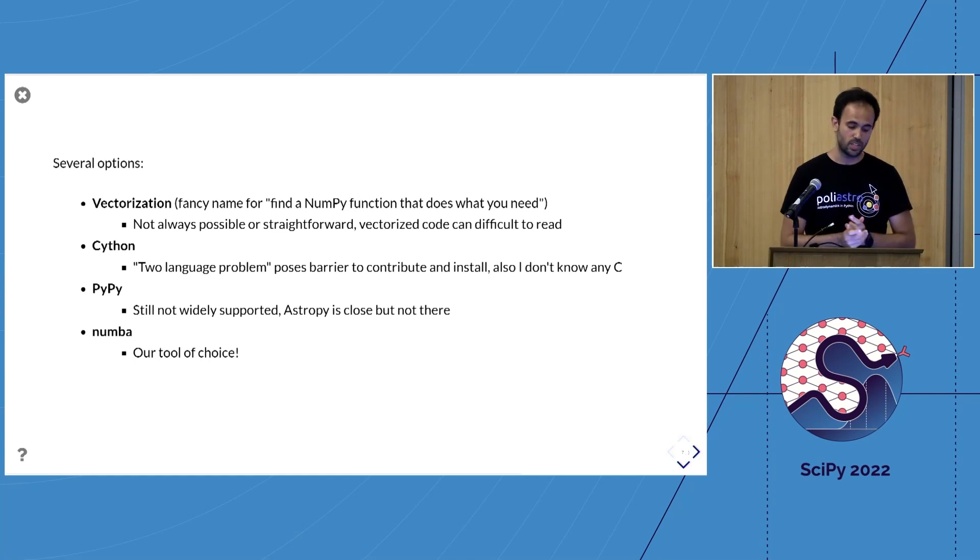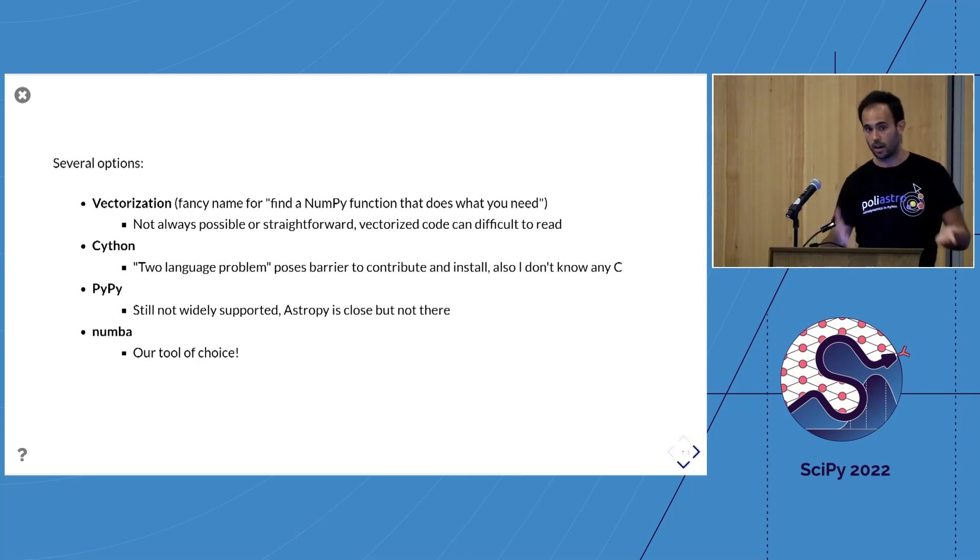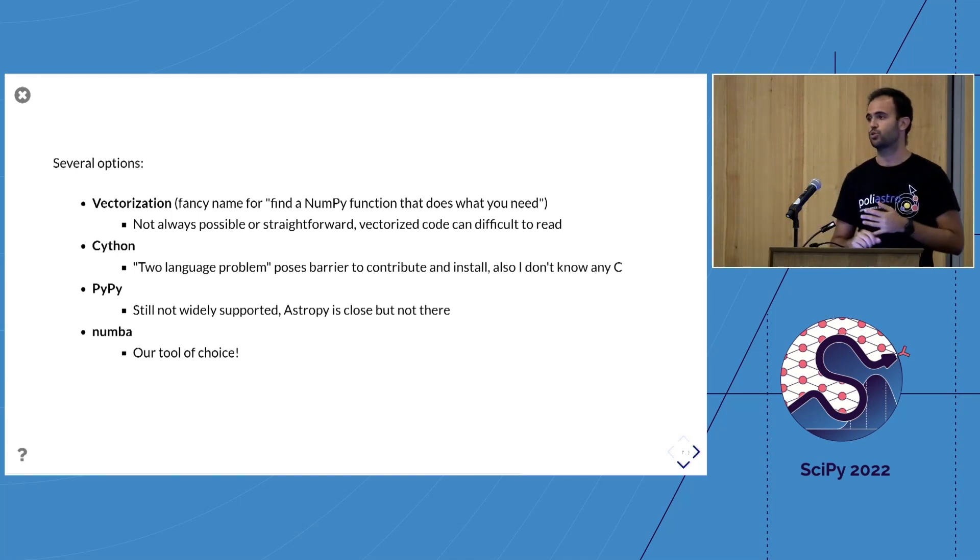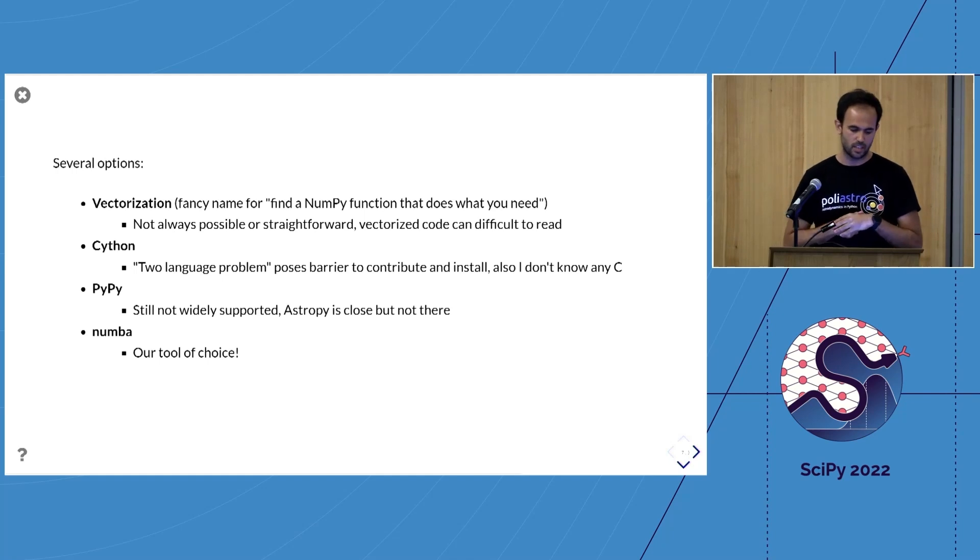There are several options to accelerate Python code. I'm not going to get into details, but we've considered them all. We started with vectorization, which is a fancy word for finding a NumPy function that does what you need or writing your computation in a way that fits NumPy arrays. I found that, first, this is not always easy to do, especially with sequential problems like integrating an ordinary differential equation. Also, vectorized code can sometimes be super difficult to read. There's Cython as well, but I wanted to avoid the two-language problem. There's PyPy, but it's still not widely supported. Finally, we got to Numba, which is our tool of choice.